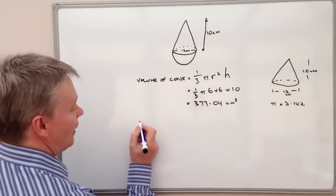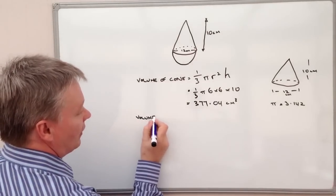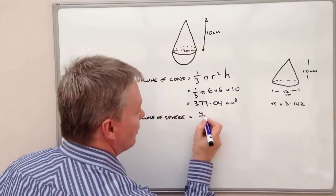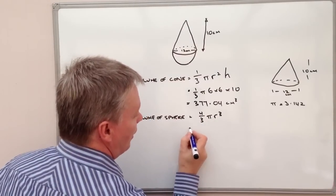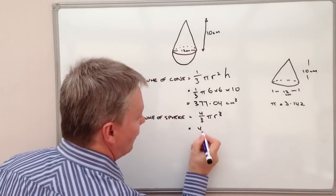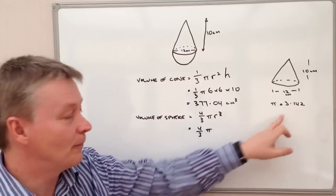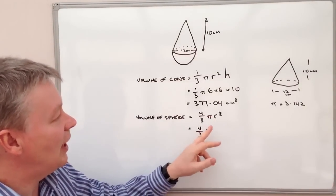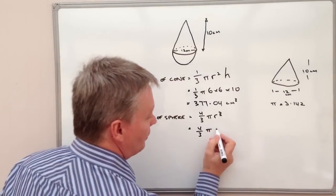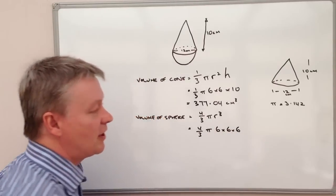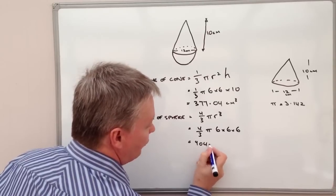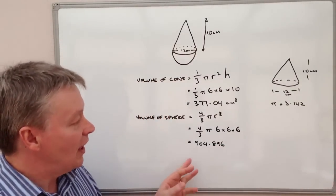Next we look at the volume of the hemisphere. The formula we use is the volume of a sphere: four thirds pi r cubed. Again, we have to make sure we put the correct numbers into the formula. So it's four thirds, pi as 3.142, and the value of r is again 6, because the diameter is 12. I'll remind myself that it's 6 times 6 times 6 because it's radius cubed. Calculating that gives 904.896.